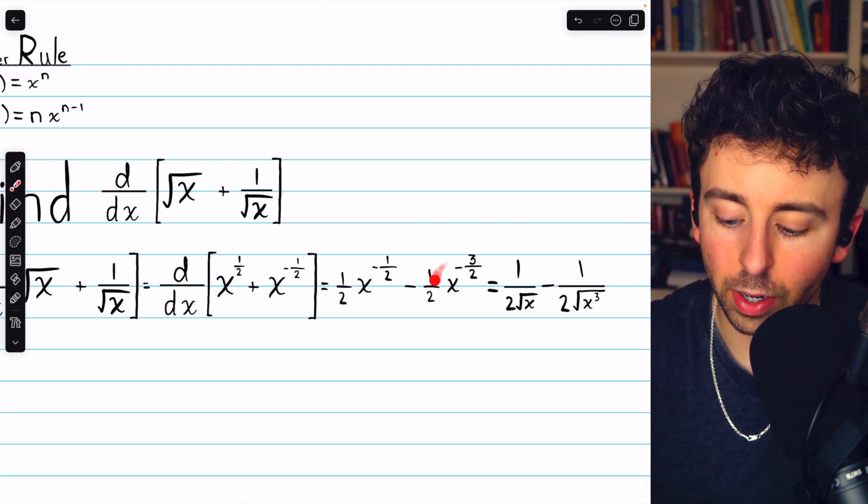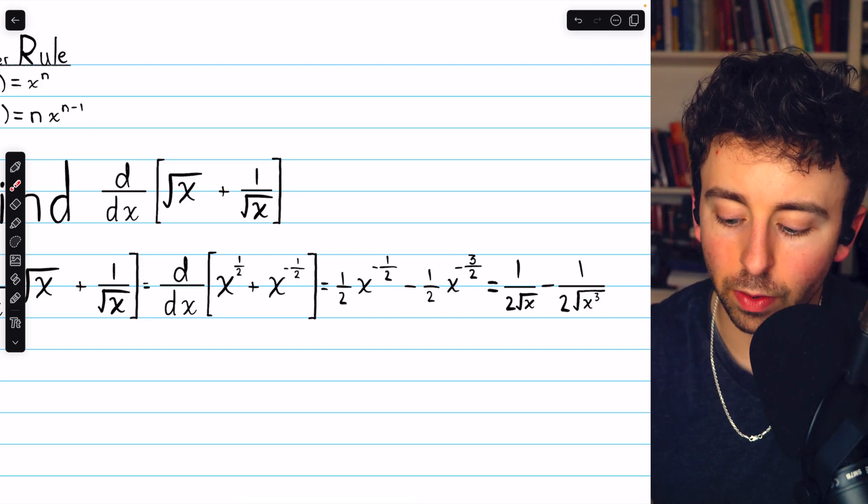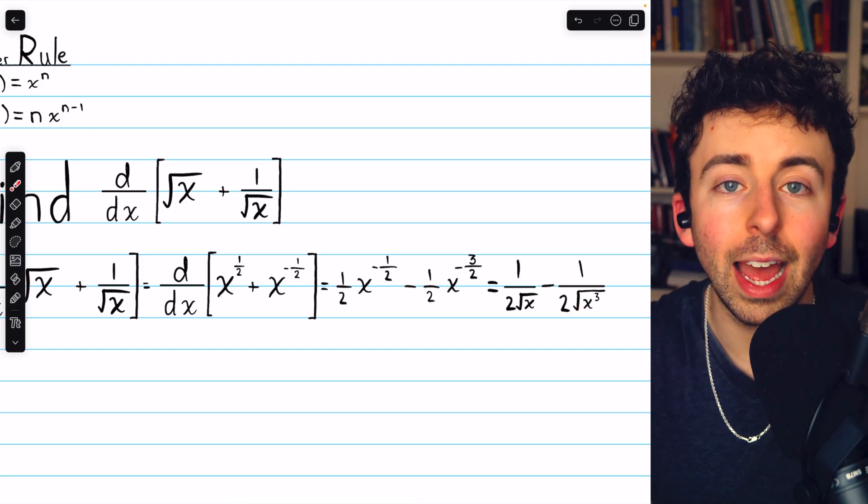Same thing going on over here. The denominator of this power is 2, so it's a square root. And the numerator is 3, so that's a power of 3, so the square root of x cubed.